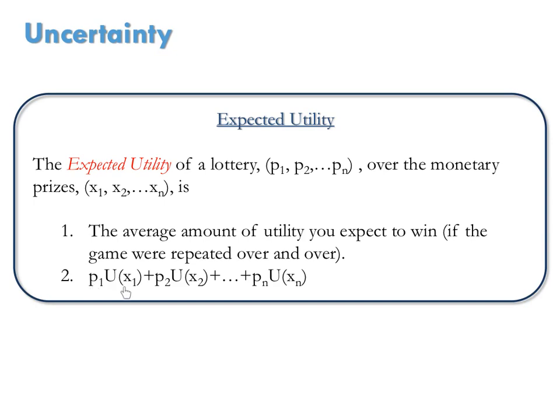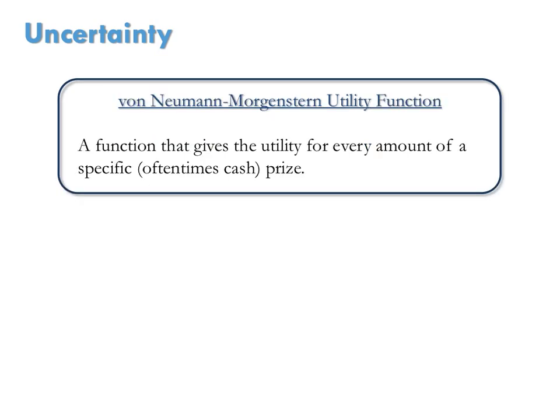But now what we're weighting is the utility of each cash prize, rather than the cash prizes themselves. The utility function that we're using that gives the utility for every amount of a monetary or cash prize is called a Von Neumann-Morgenstern utility function.